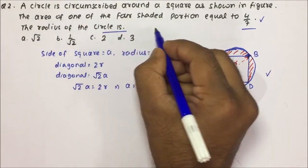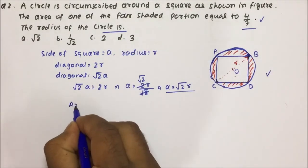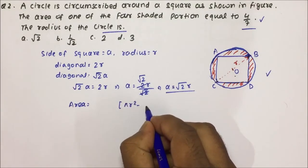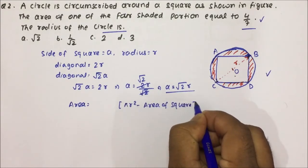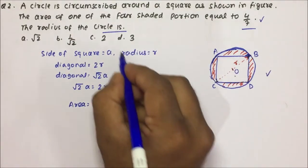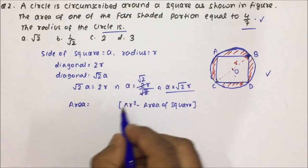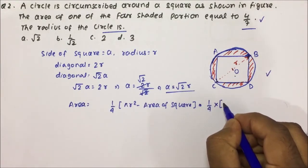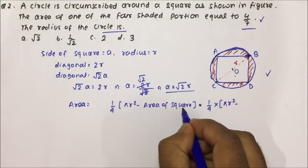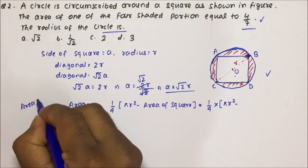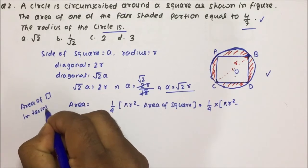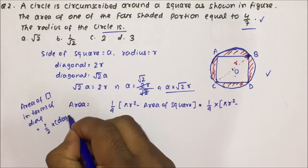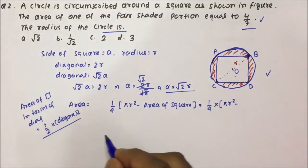Now, the area of the shaded portion is the area of the circle minus the area of the square, divided by 4 (since there are four equal shaded regions). So the area of one shaded portion = (1/4)(πR² - area of square). The area of the square in terms of diagonal is (1/2) × diagonal². Since diagonal = 2R, area of square = (1/2)(2R)² = 2R².